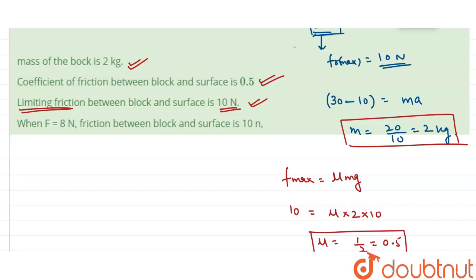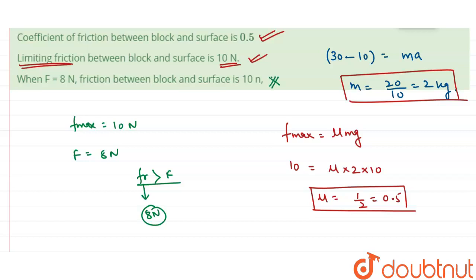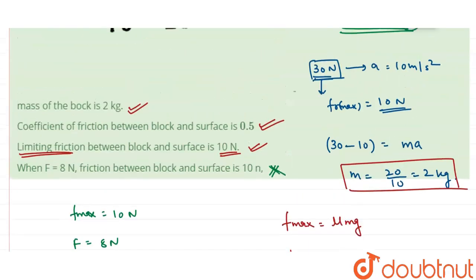The last option says when force is 8 newton, friction between block and surface is 10 newton. However, since the maximum friction is 10 newton, when the applied force is only 8 newton, the friction force required to stop the body is only 8 newton — not 10 newton. So this option is incorrect.